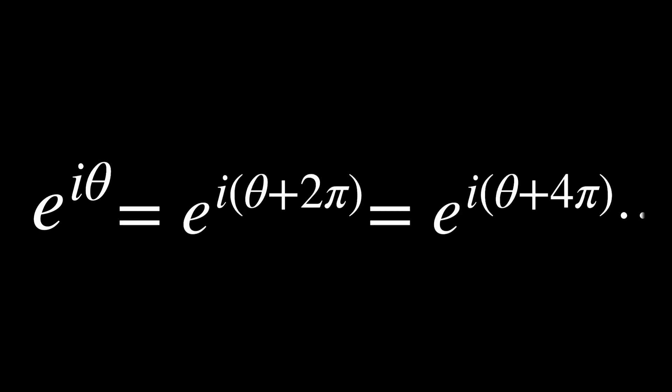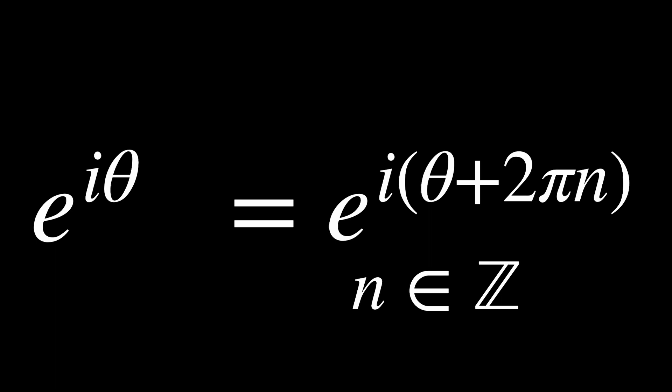Since angles don't change when we add 2 pi, we get that e to the i theta is equal to e to the i theta plus 2 pi. More generally, we can write e to the i theta is equal to e to the i theta plus 2 pi times n, where n is an integer. We can also use our formula to write real numbers in this form. For example, let's do the number 1. The absolute value of 1 is 1, and its angle would be 0 or 2 pi or so on. So we can rewrite 1 as e to the i times 2 pi.